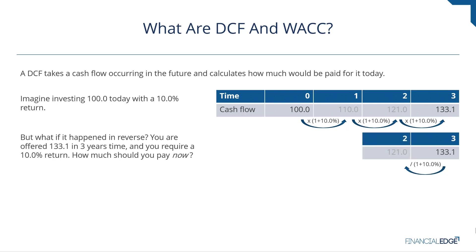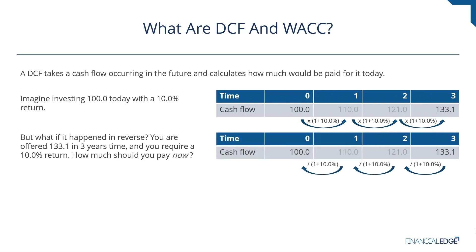By year two it's discounted to $121, by year one it's discounted to $110, and by year zero — time period zero — it's $100. That's how much I would pay now in order to secure a cash flow of $133.1 in three years' time, assuming I require a 10% return.